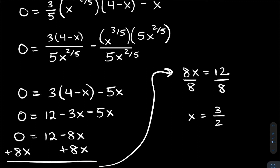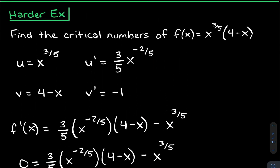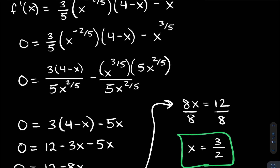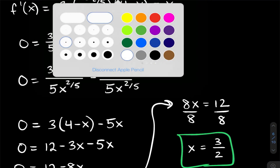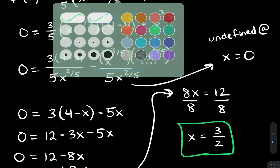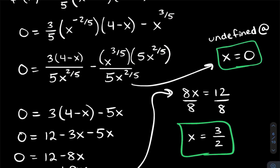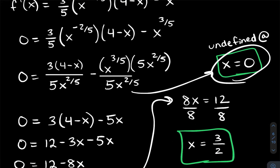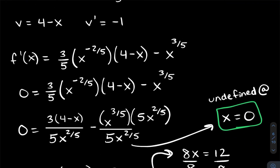That's one critical number — x = 3/2. But we also need to check where the derivative is undefined. Since we have a fraction with x^(2/5) in the denominator, the derivative is undefined when x = 0. So x = 0 is also a critical number. When you see a fraction in the derivative, always watch out for values that make the denominator zero.